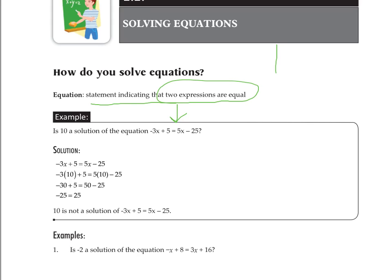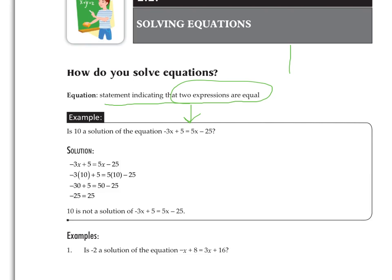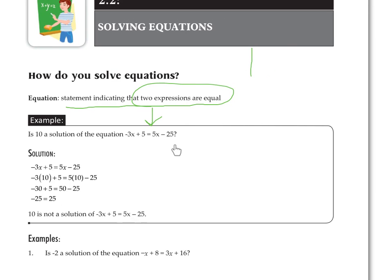We're going to start by verifying the solution to a given equation. We've been given the equation negative 3x plus 5 equals 5x minus 25, and asked: is 10 a solution of that equation? To do that, all you have to do is substitute the variable — here we have an x on each side of the equation — with the given solution, 10.